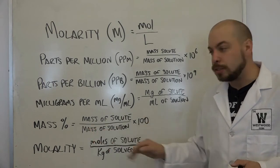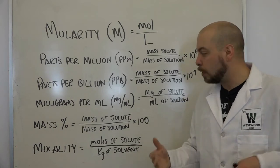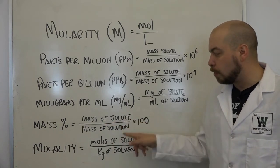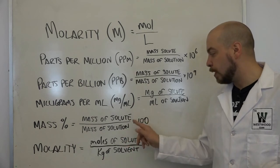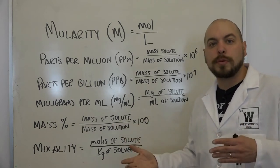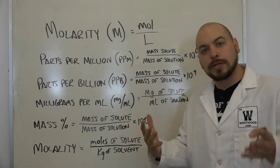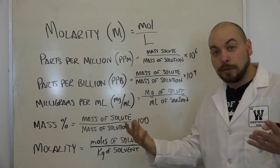You might also see mass percentage. This is actually one that you might need to calculate in some cases here in AP chemistry. And that's going to be the mass of the solute over the mass of the solution times 100. We talked about mass percentage first when we talked about mass percentage of an atom or an element within a compound. You can also do it within a solution.